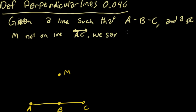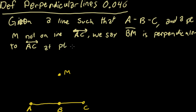We say BM, that segment, is perpendicular to AC at point B. Actually, we don't need at point B. We'll just say it's perpendicular.